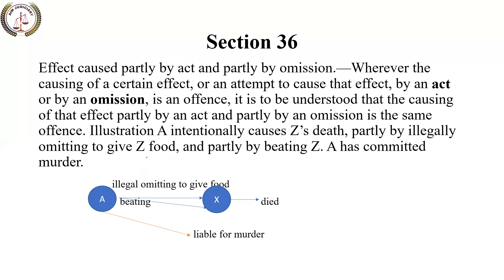Section 36 deals with both act and omission. Where several persons are involved — if one person commits an offense by omission (for example, not giving food, causing starvation) and another person commits a direct act — then both the act and omission together cause the final result. For example, X starves because one person omits to provide food, and A directly acts — X dies. Both the act and omission together caused the death. This is Section 36.